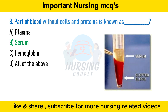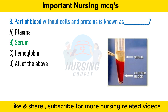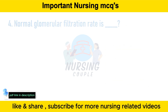To obtain serum, a blood sample is allowed to clot. The sample is then centrifuged to remove the clots and blood cells, and the resulting liquid supernatant is known as serum.